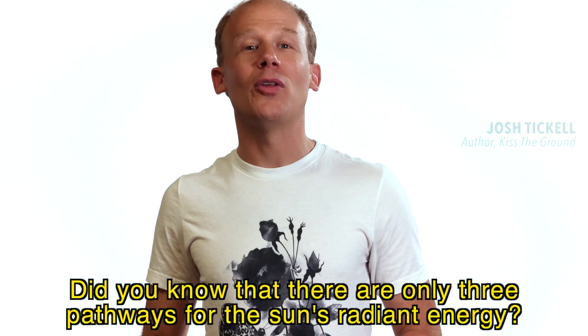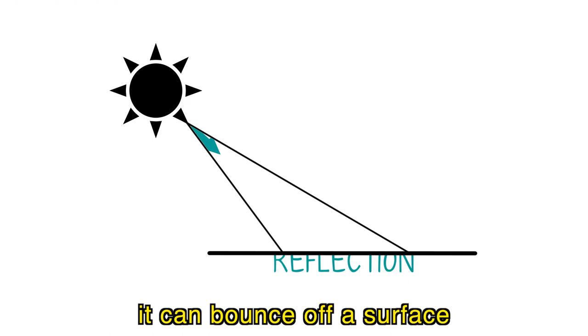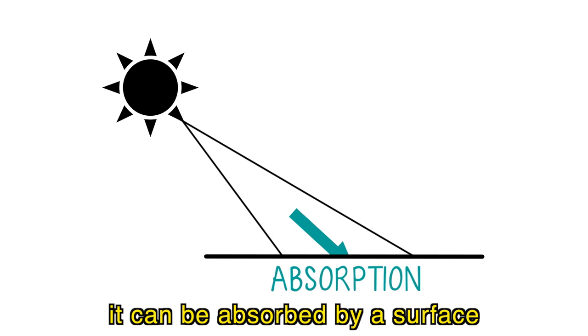Did you know that there are only three pathways for the sun's radiant energy? It can bounce off a surface and go back into the atmosphere, it can be absorbed by a surface which gets really hot, or it can cause photosynthesis.